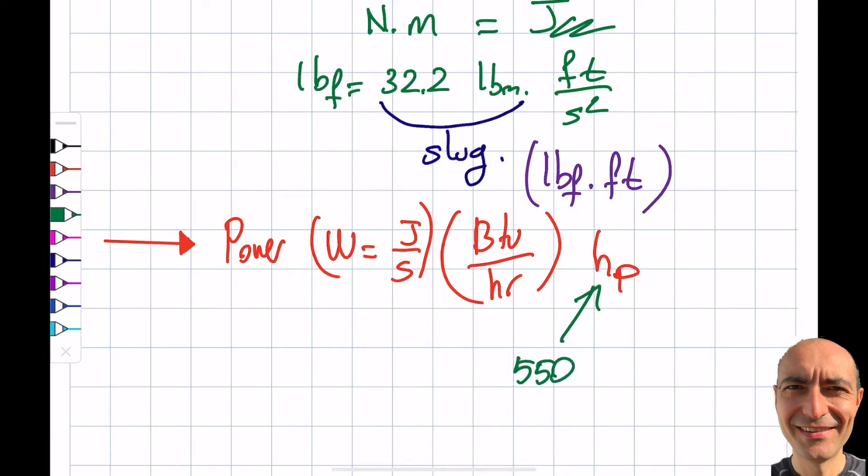This horsepower figure that we use all day long for cars comes from this conversion: it's 550 foot-pounds per second. Apparently, which I'm just teaching here, a horse can move 550 pounds one foot in one second. That's how much one horse can do. I don't know whether that's entirely accurate or not, but it is what it is.